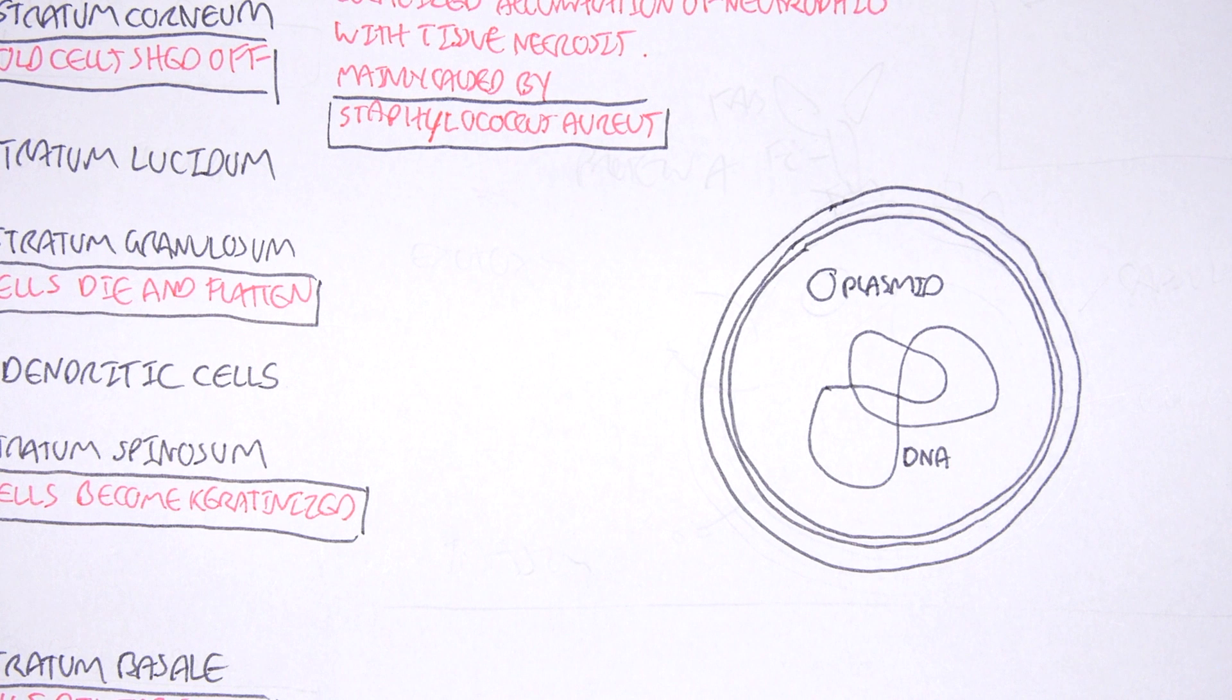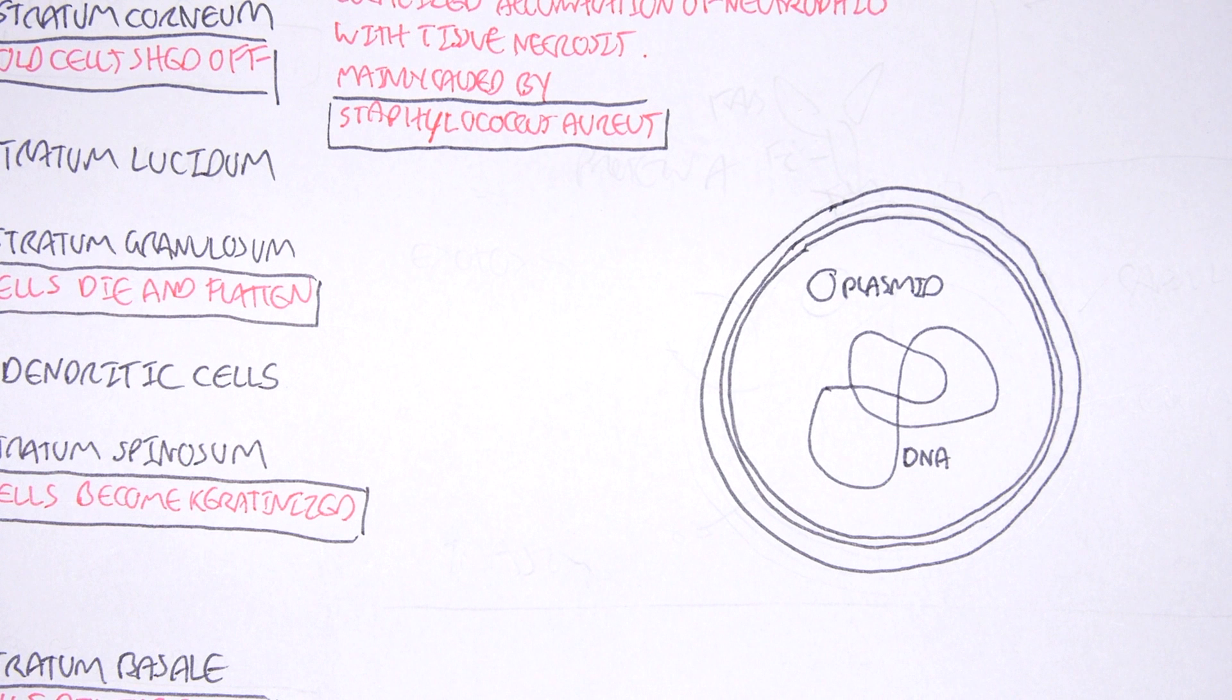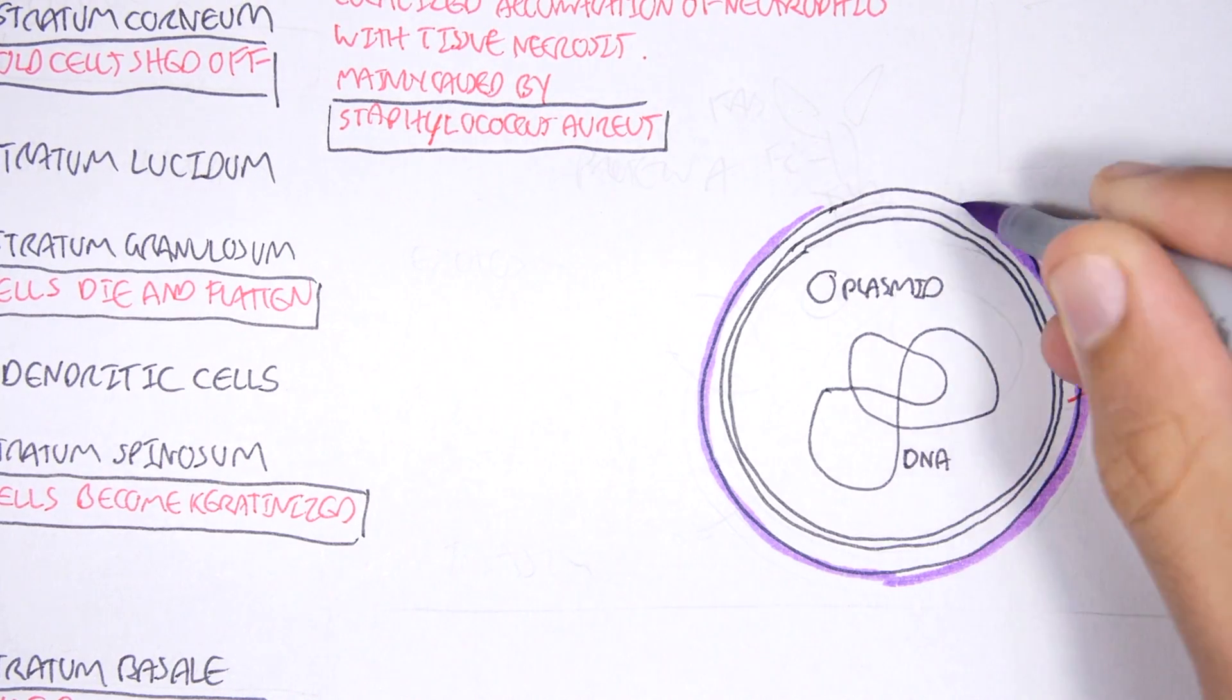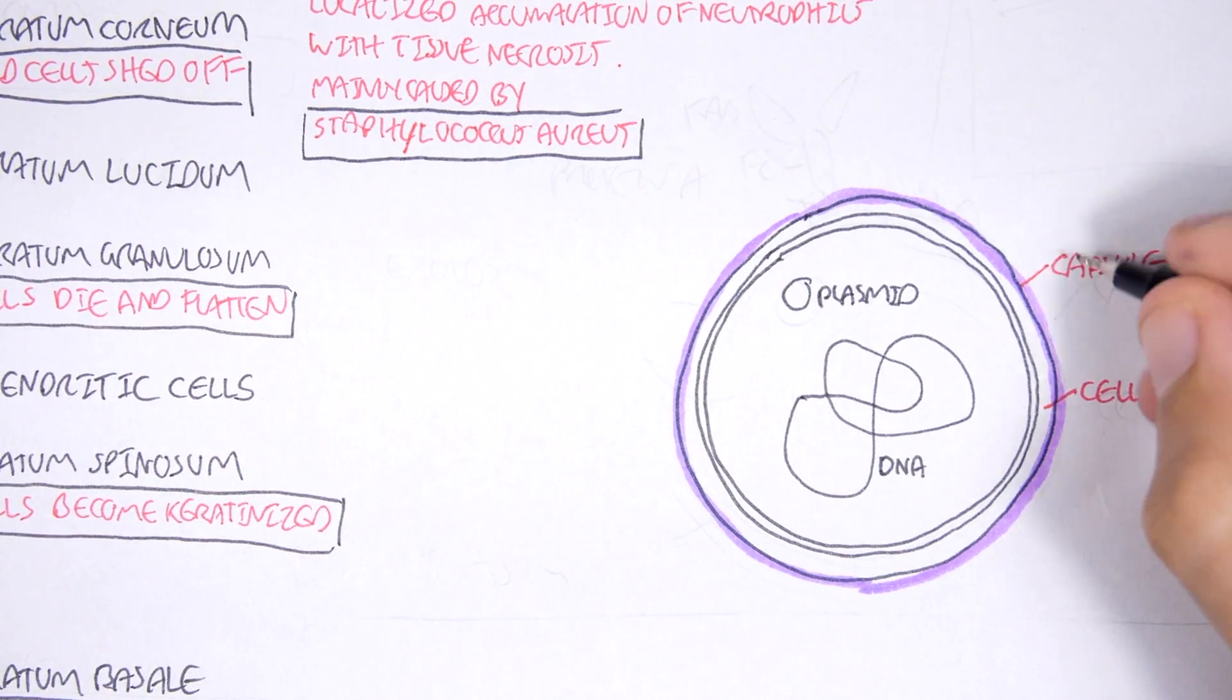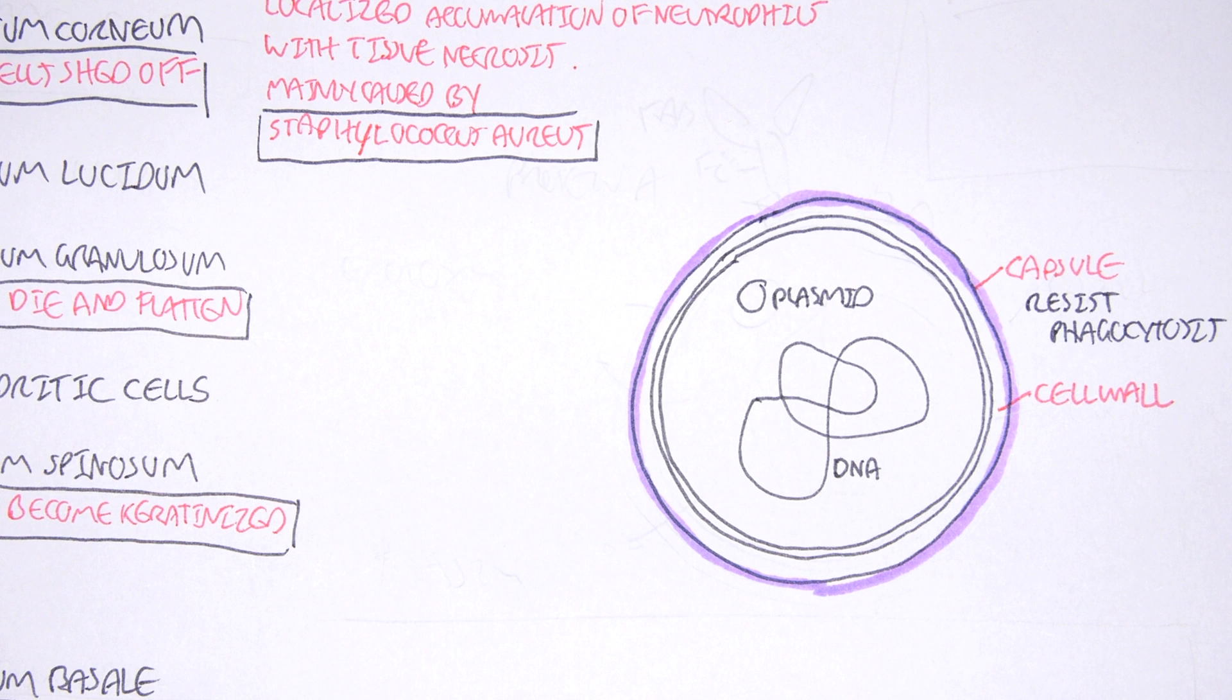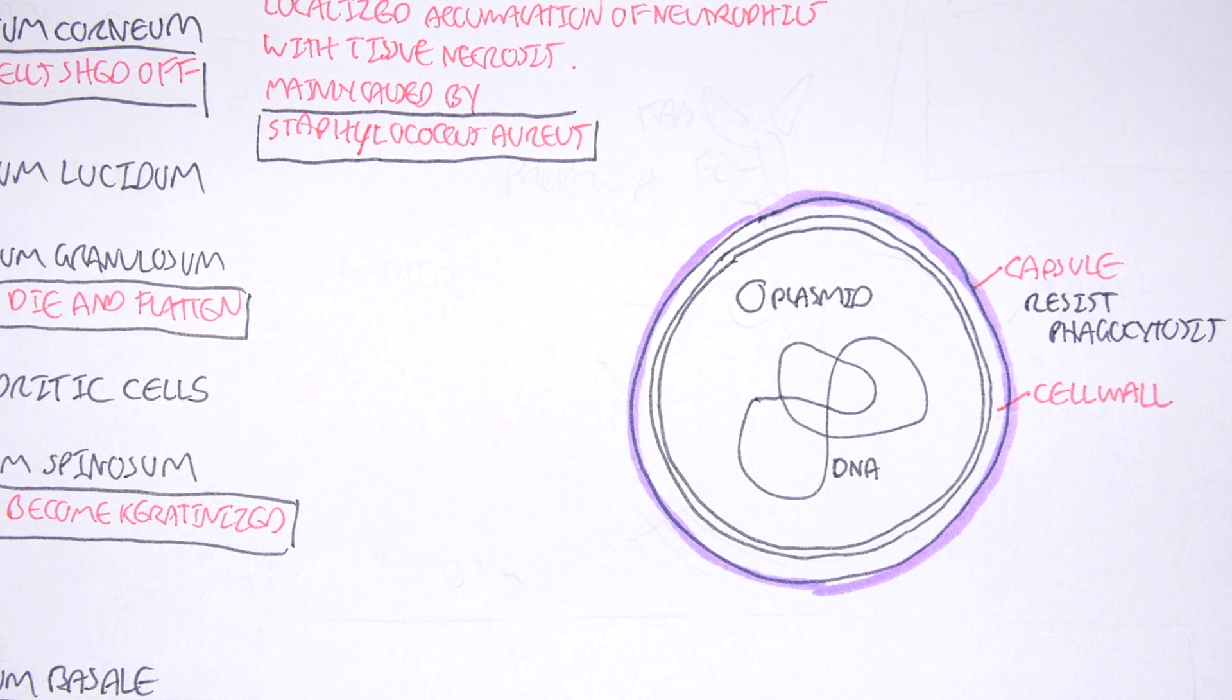Now let's look at some virulent factors of the bacteria which allow it to infiltrate and invade other organisms. Staphylococcus aureus is a gram-positive bacteria and has a cell wall with a thick peptidoglycan layer and an inner lipid membrane layer. Staphylococcus aureus has a capsule that surrounds it, which allows it to resist phagocytosis. So when it infiltrates a body or invades a body, our body for example, the phagocytes within our body are unable to eat this bacteria up in some instances.